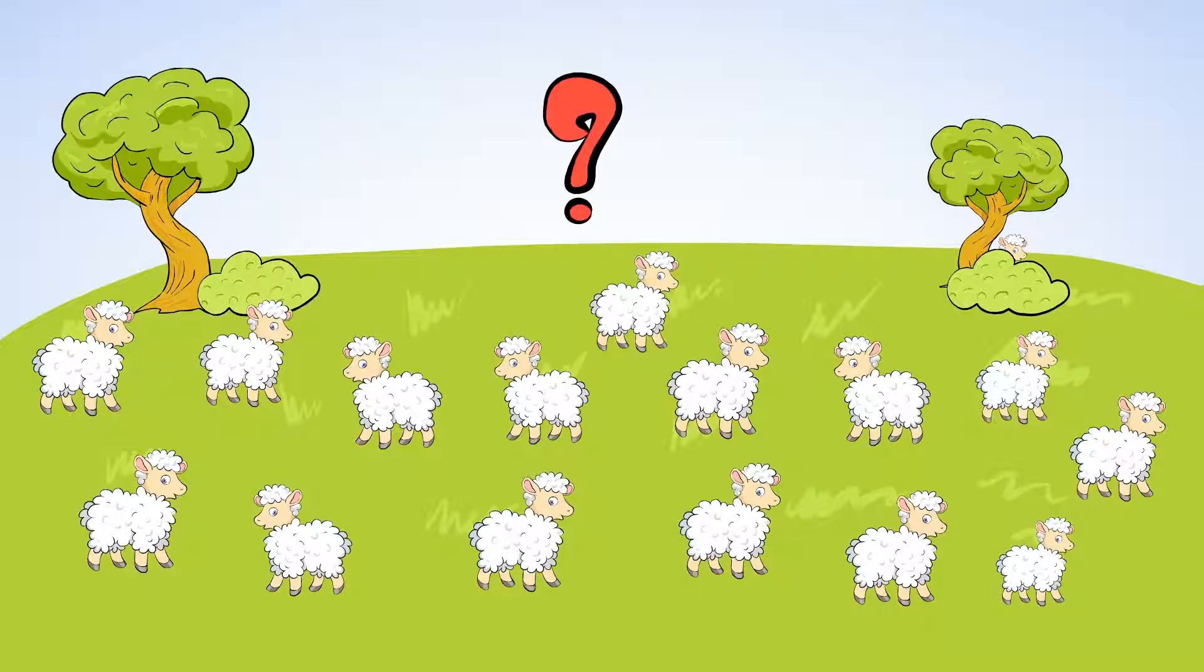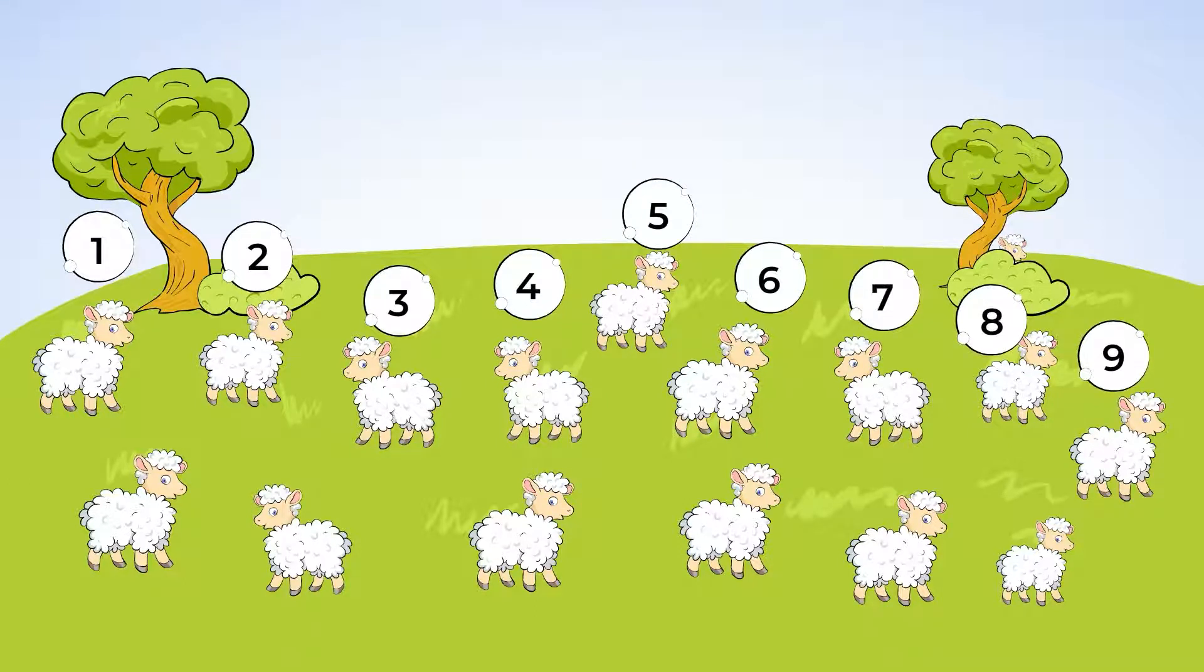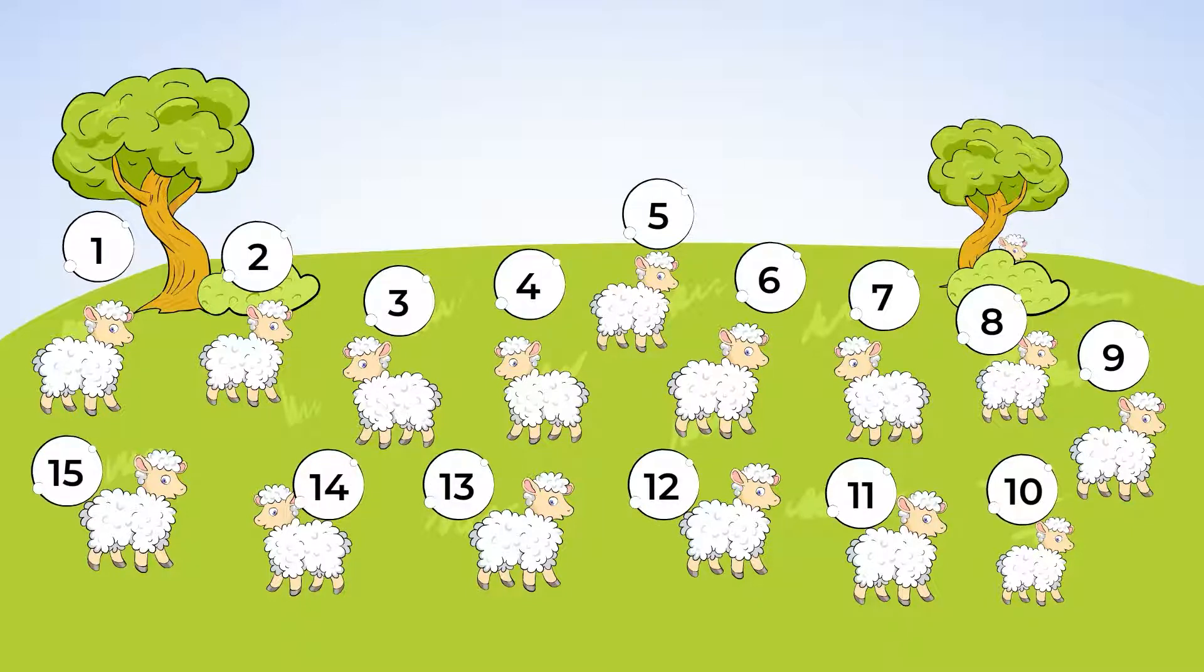Here are some baby lambs and they're waiting for their mama to come back. How many baby lambs do you see? Let's count. 1, 2, 3, 4, 5, 6, 7, 8, 9, 10, 11, 12, 13, 14, 15. 15 little lambs.